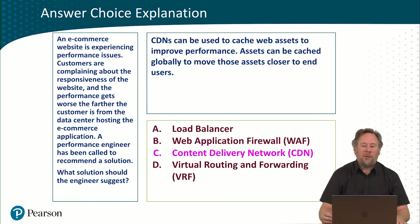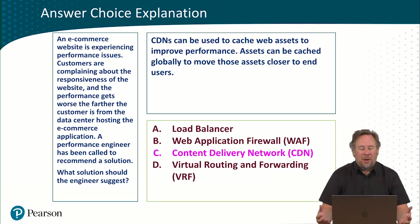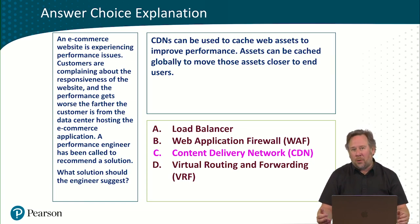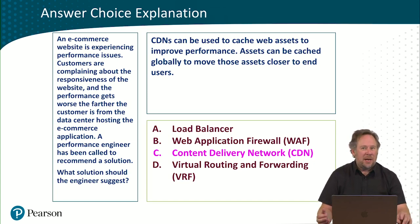Answer C is a CDN, or content delivery network. These can be used to cache web assets in order to improve performance. This might actually be a good answer — assets can be cached globally in order to move those assets closer geographically to our end users. This might be our correct answer.